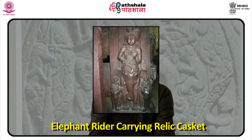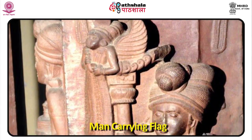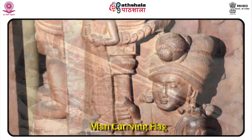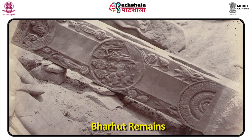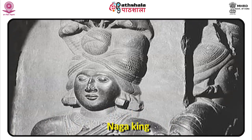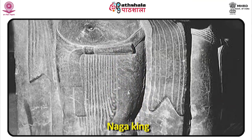This stupa is more ornamented than the one at Sanchi, and motifs on it include Gaja Lakshmi, an elephant rider carrying the relic casket in his right hand, his companion holding a pillar standard, a Greek warrior, and Naga kings. One Naga king has an inscription which reads 'Chakavaka king of Nagas.' The cult of serpent worship seems to have been very strong in ancient India, and traces of it are seen even today. Yaksha and yakshi images are also found in significant number, showing that the cult still had strong grounding with people.